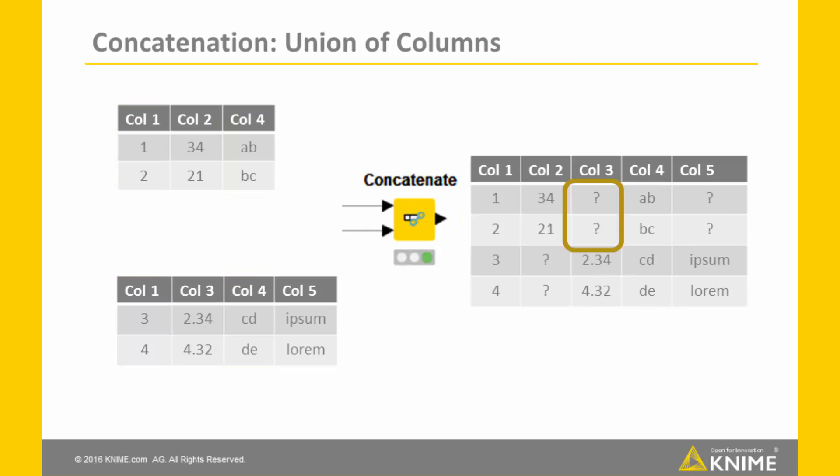or the union of columns, that is, all the columns, common or not common. If you choose to keep the union of columns, the missing parts of the not common columns will be filled with missing values.